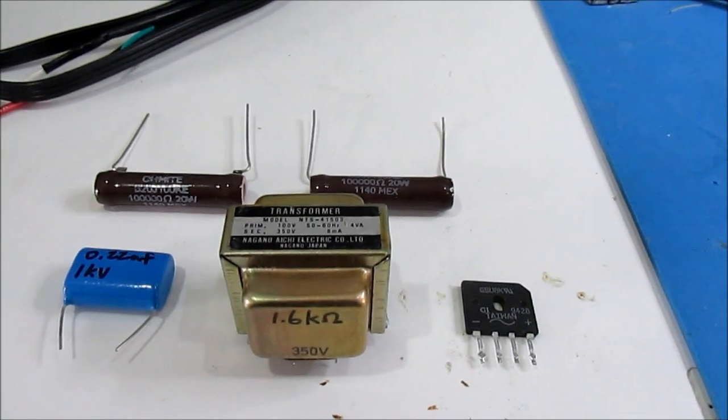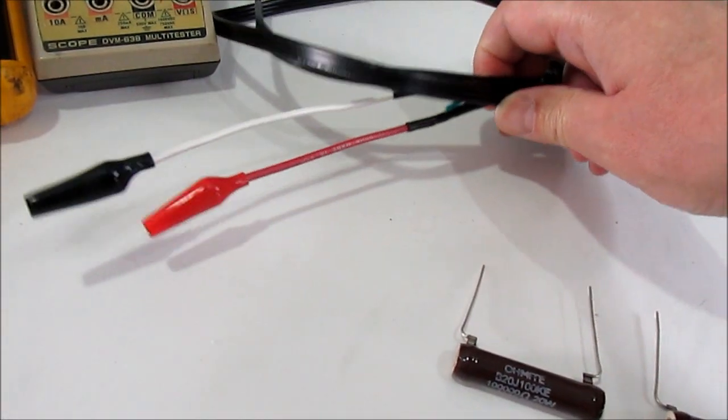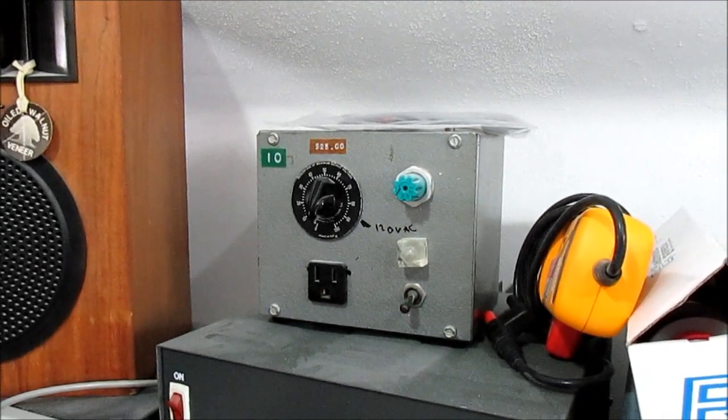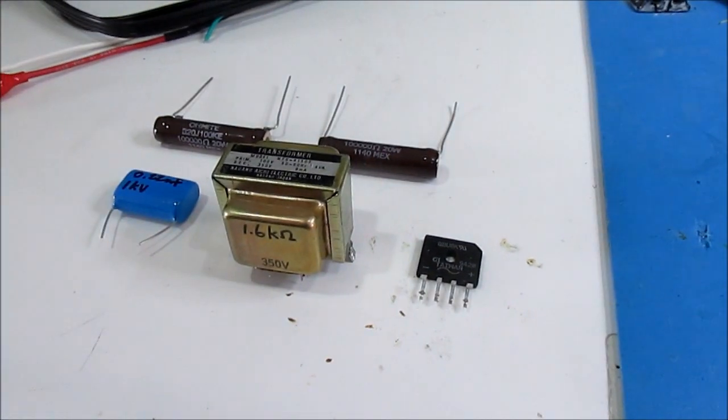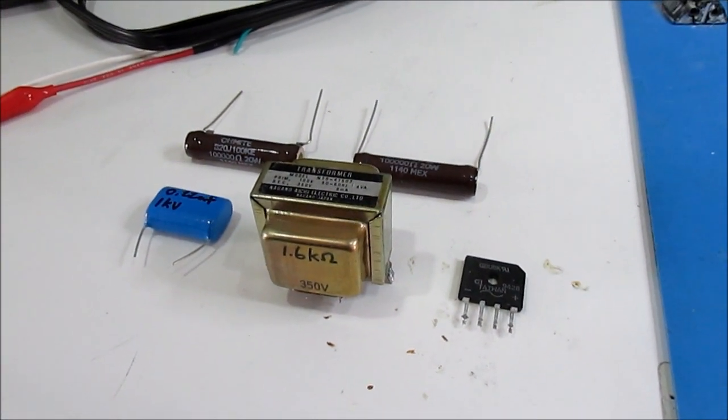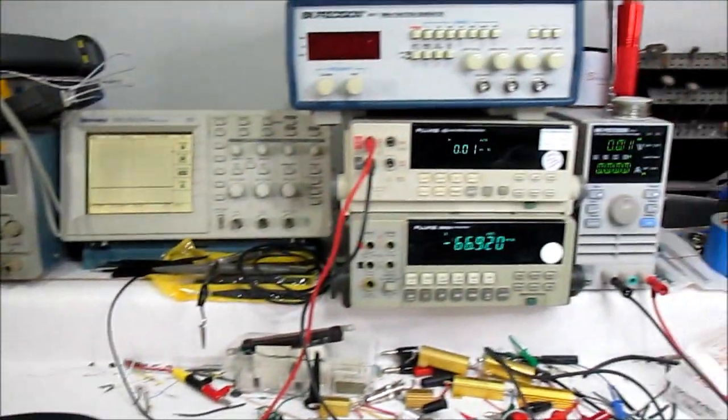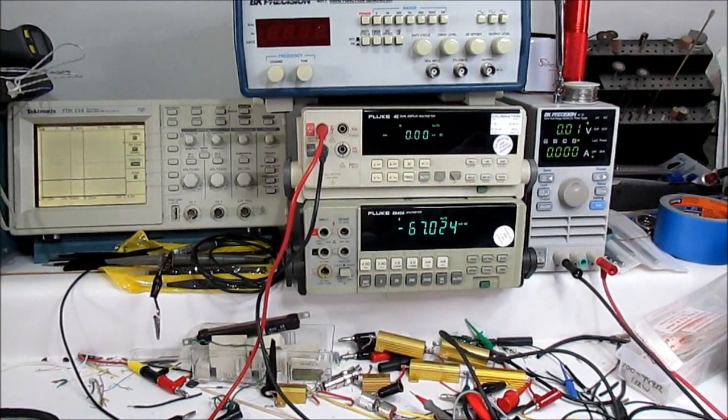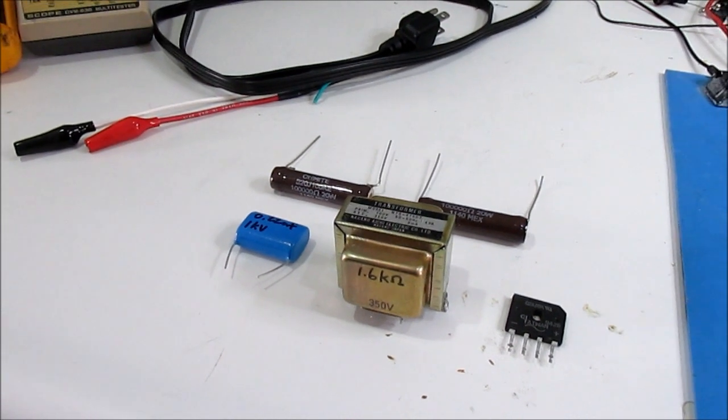I'm going to attach the primary of the transformer using my death cord up to this variac so that we can adjust the output of this thing. So we'll get a DC value on it with some AC ripple and then we'll see what each of these meters is going to report on that. We'll be back after I build this up and we can try checking it out.